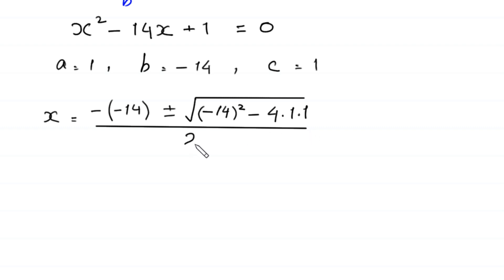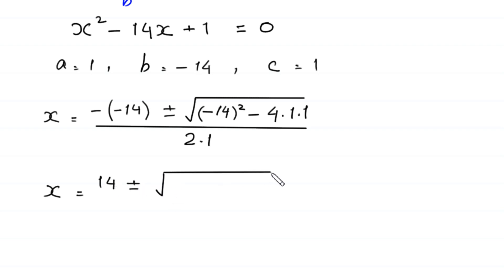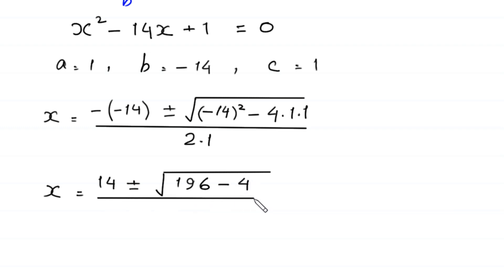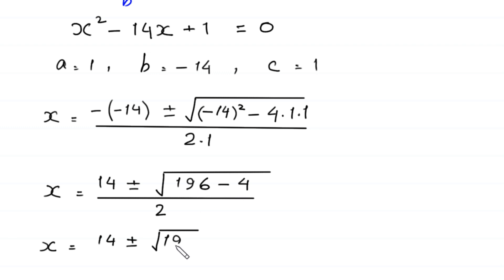Divided by 2 times a, which is 1. So x equals 14 plus or minus the square root of 196 minus 4, all divided by 2. That gives x equals 14 plus or minus the square root of 192, divided by 2.